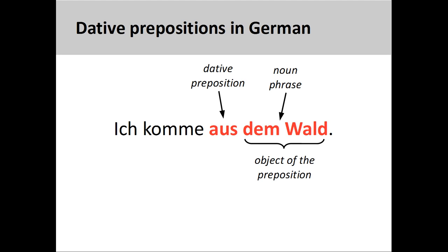In an earlier presentation we saw that dative prepositional phrases consist of a dative preposition and the object of that preposition. Here the object of aus is the noun phrase dem Wald, with the definite article dem indicating the dative case. We also learned that there is no reason why these prepositions take a dative object — they simply have to be memorized.